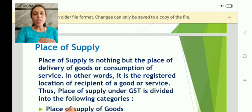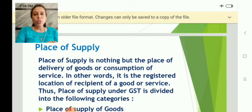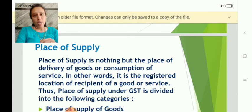For example, you are in Udupi and you place an order through Amazon or Flipkart for a mobile phone. You want to give this mobile phone as a gift to your friend who is in Maharashtra. You order from Udupi through Amazon, and the goods are not delivered to you — instead they are delivered to your friend in Maharashtra. Now, even though the order was placed by you in Karnataka, since the goods are delivered to Maharashtra, Maharashtra is considered as the place of supply.